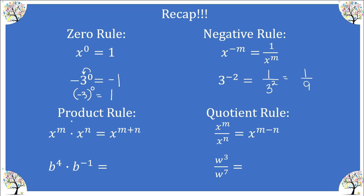The product rule says if you are multiplying two bases that are the same, you can combine them into one factor by adding the two exponents. Here we have an example: B to the fourth times B to the negative one. We have the same base, so we can combine these factors into one by adding the exponents and we get B to the third.